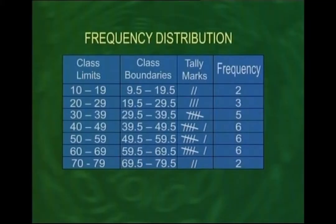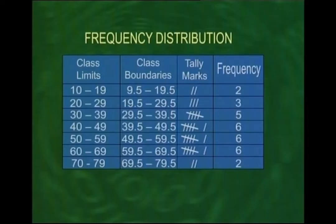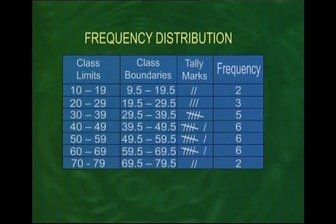For this particular data set, we have the frequency distribution now on screen. The class limits are 10 to 19, 20 to 29, and so on. The class boundaries are obtained by averaging adjacent class limits, giving 9.5, 19.5, 29.5, and so on. Counting the observations in all classes, our frequencies come out to be 2, 3, 5, 6, 6, 6, and 2.